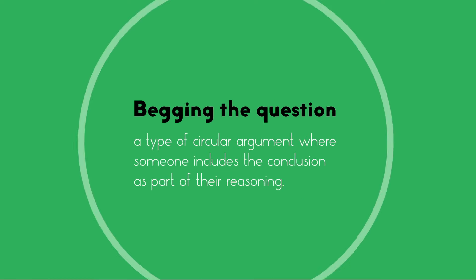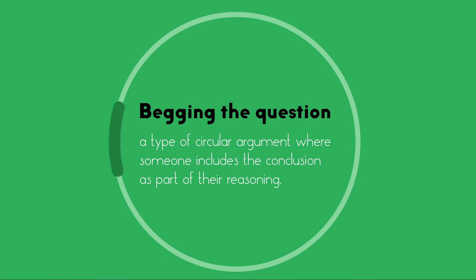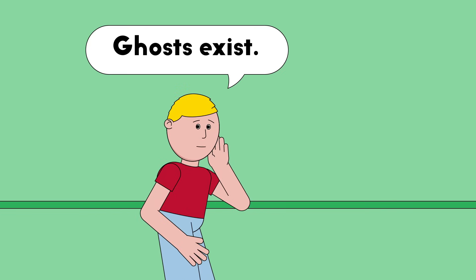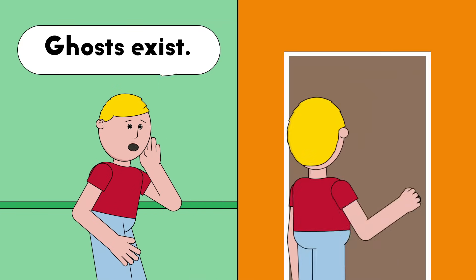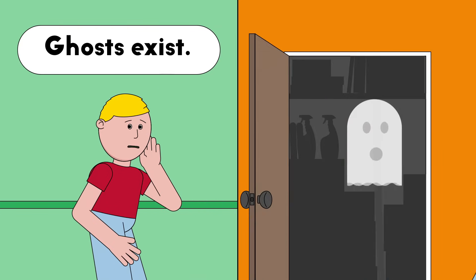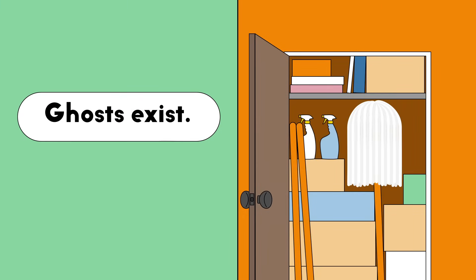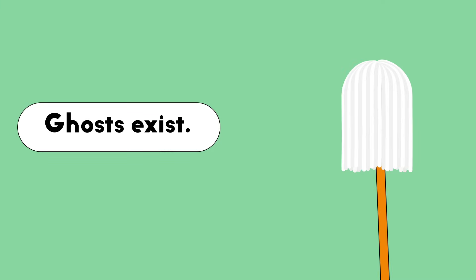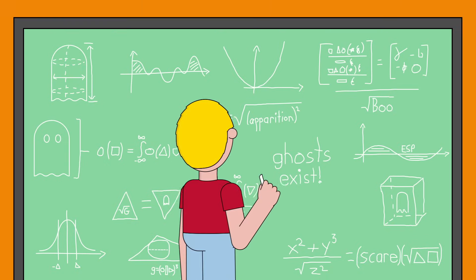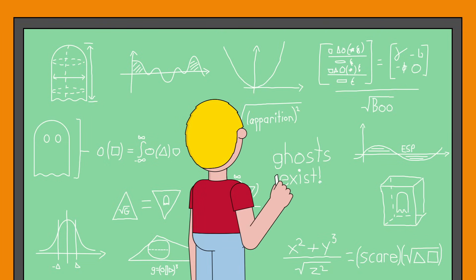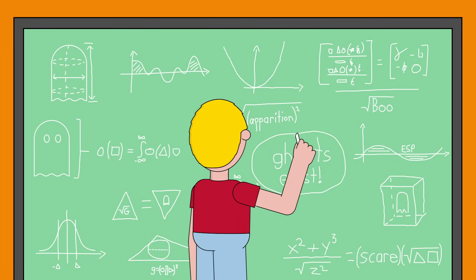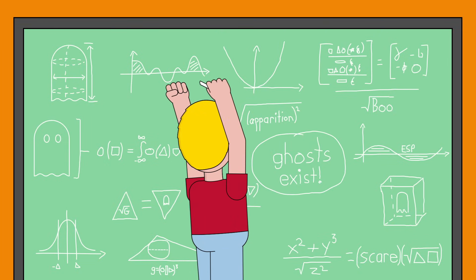Begging the question is a type of circular argument, where someone includes the conclusion as a part of their reasoning. George says ghosts exist because I saw a ghost in my closet. His conclusion is ghosts exist, and his premise also assumes that ghosts exist. Rather than assuming that ghosts exist from the get-go, George should be using evidence and reasoning to prove that they exist.